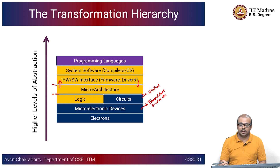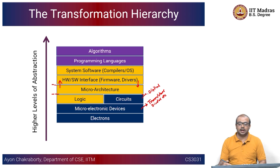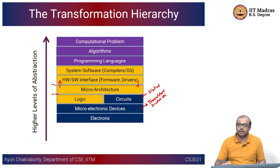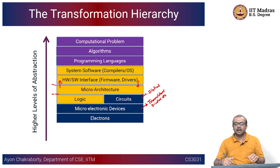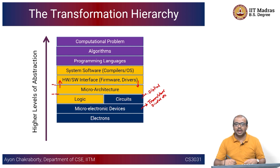On top of that, you have traditional computing-related tools — for example, programming languages, where you write a high-level program that will eventually be executed on a given microarchitecture. And then you have things like algorithms and computational problems to start with. If you look at the various levels of abstraction in the transformation hierarchy, you do start with solving problems by orchestrating electrons, and on the other end of the spectrum you have a computational problem that you need an algorithm to solve. For example, to sort n numbers, you could choose bubble sort or quick sort — those are algorithmic approaches to your computational problem.